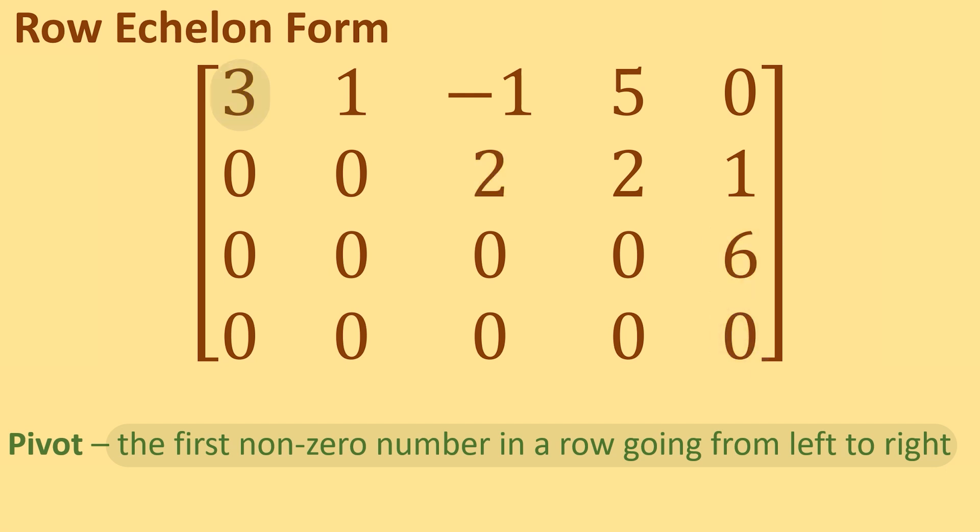The leftmost nonzero value in row 1 is 3, so 3 is a pivot. The leftmost nonzero value in row 2 is 2, so 2 is a pivot. The leftmost nonzero value in row 3 is 6, so 6 is a pivot. Row 4 has no nonzero value, so no pivot exists in row 4.